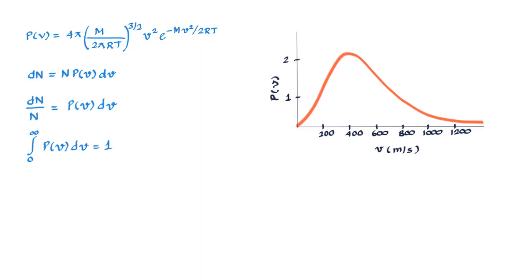And again using the same logic, the fraction of molecules which have speeds between let's say V1 and V2 should equal the integral of P(v) dv integrated from V1 to V2.